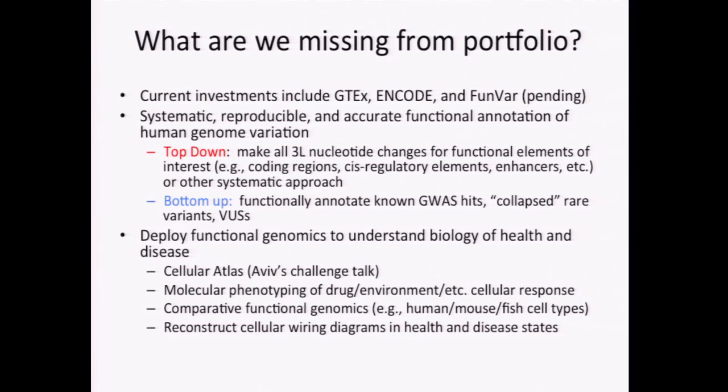To do that — make all coding region changes in a protein of interest, cis-regulatory elements, and so on — you're not going to get at that from the existing set of projects. We'd need to think about how we might be able to do that. The second set of questions is to deploy functional genomics in the context of understanding the biology of health and disease: Aviv's visionary talk on the cellular atlas, molecular phenotyping of drug and environment cellular response, comparative functional genomics comparing human and mouse cell types, and reconstructing cellular wiring diagrams.